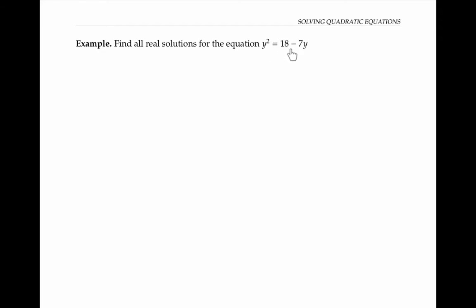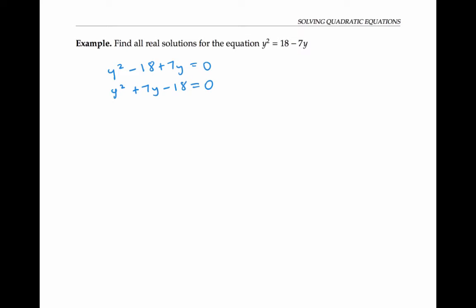Let's start with the example y squared equals 18 minus seven y. Here our variable is y. We need to rewrite this quadratic equation in standard form. We can do this by subtracting 18 from both sides and adding seven y to both sides, giving us y squared plus seven y minus 18 equals zero. Now I've got my equation in standard form. Next, I'm going to try to factor it.